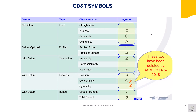This is because profile without a datum also controls the form tolerance. The concentricity and symmetry symbols were removed by ASME Y14.5 2018, since both can be controlled by position tolerance itself. We will see a detailed explanation of each symbol in a later video.